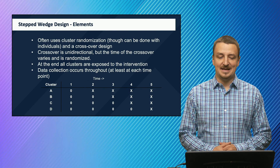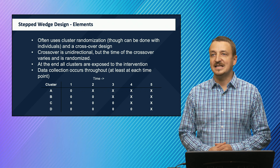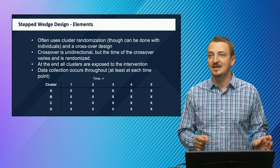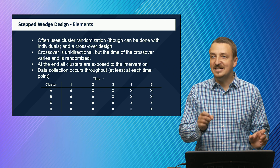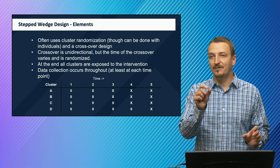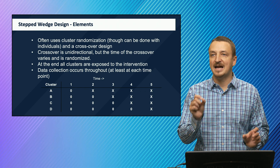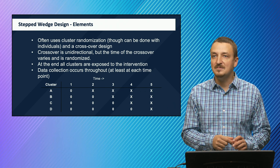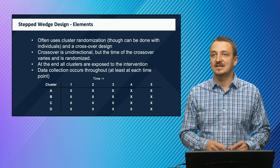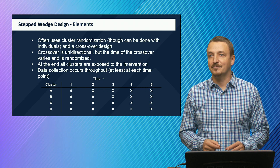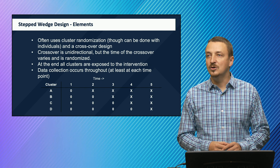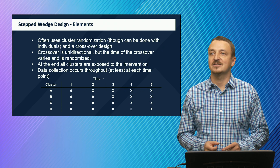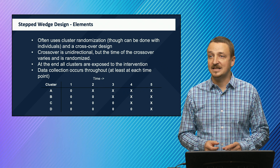What are the elements of a stepped wedge design? Placebo or standard of care is represented as zero and X is the intervention. The intervention starts across four different arms—A, B, C, and D—at different time points. On the x-axis we have time; on the y-axis we have the arm clusters. For cluster A the intervention starts at time point two, for cluster B at time point three, cluster C at time point four, and cluster D at time point five.